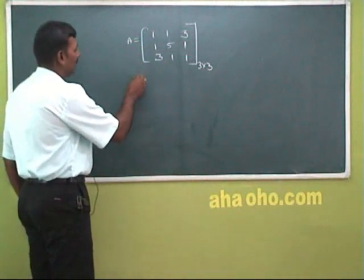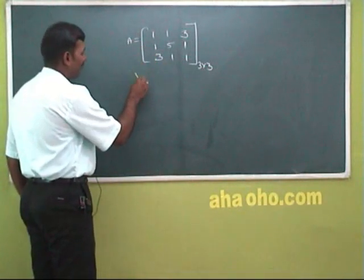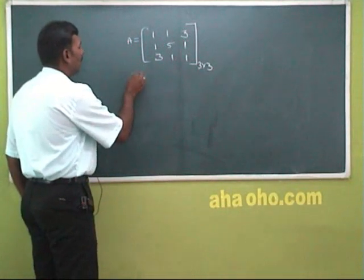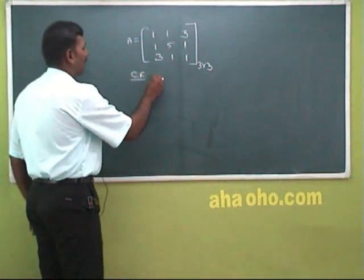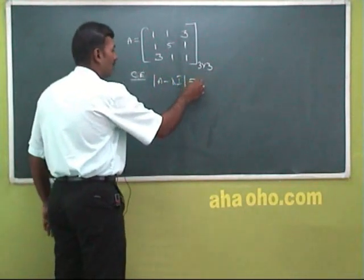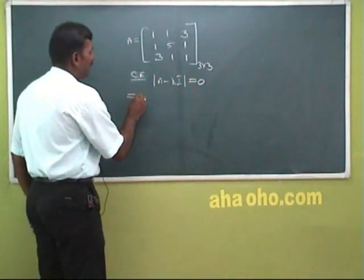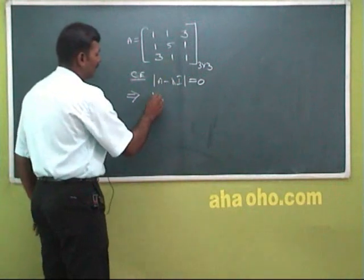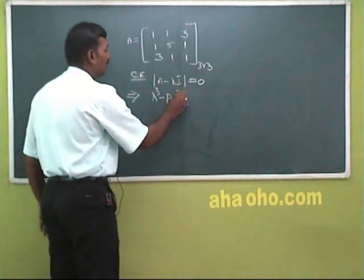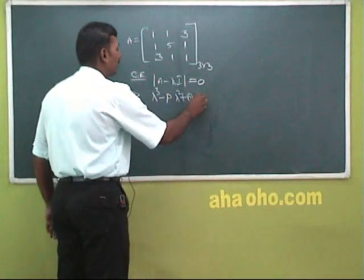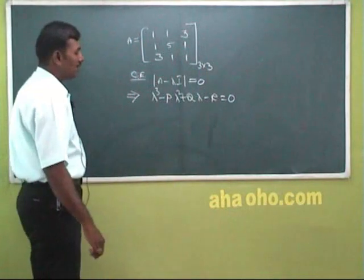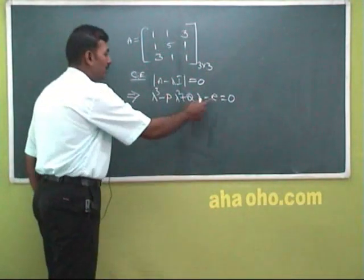What is the shortcut? For a 3x3, the characteristic equation is: determinant of (A minus lambda I) equal to 0. This expands to: lambda cubed minus P lambda squared plus Q lambda minus R equals 0. This is the characteristic equation, and we need to find P, Q, and R.